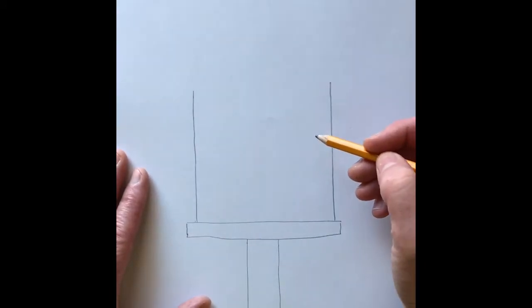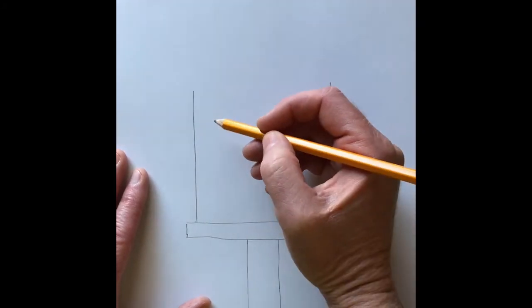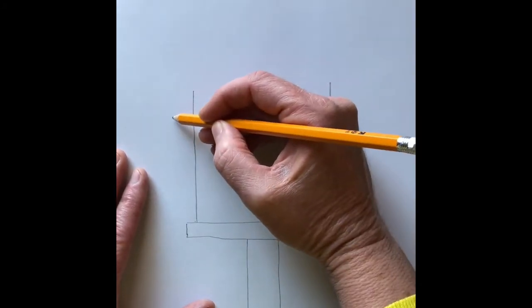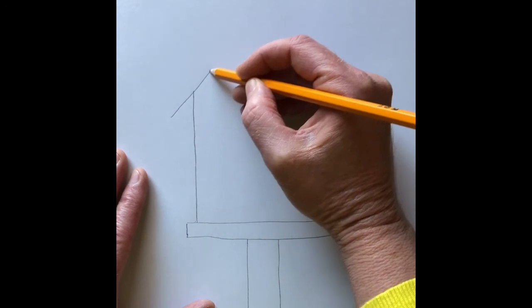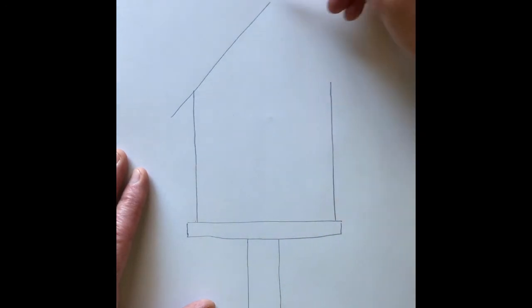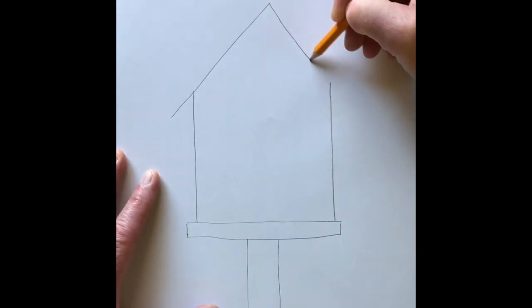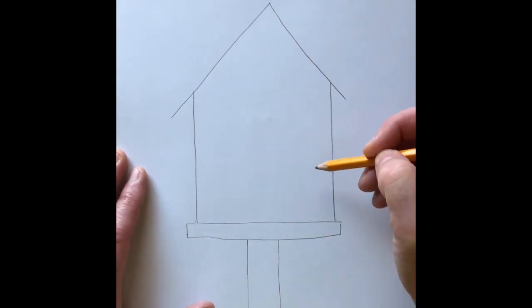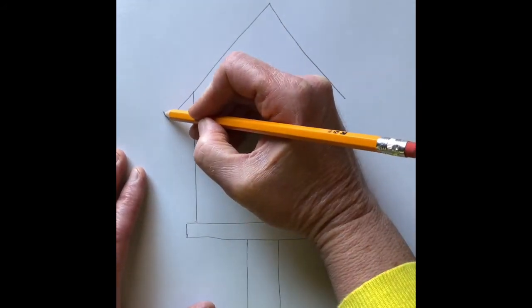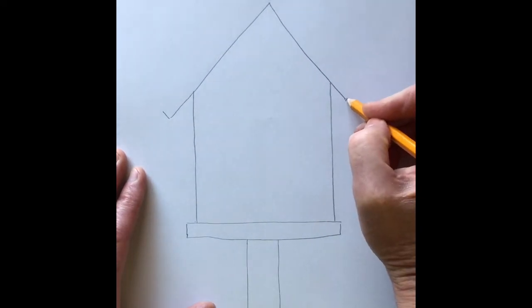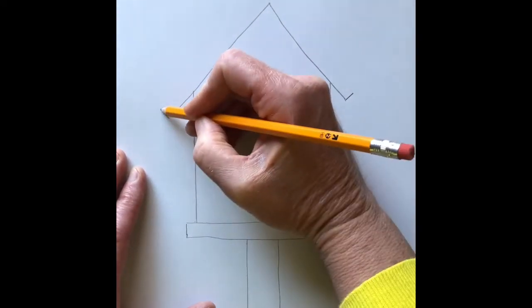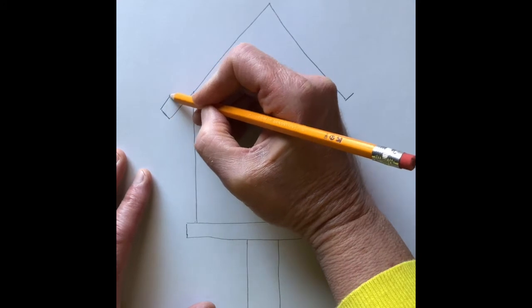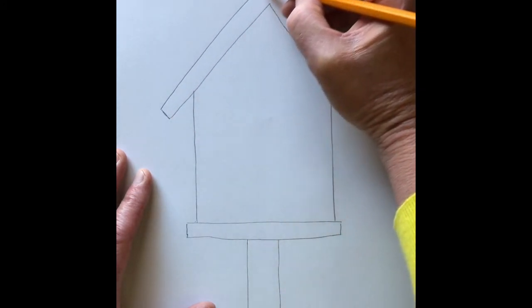And next is the roof. So I'm gonna do the roof with like an upside down letter V and connect that to the sidewalls. Now to give this roof a little bit of dimension I'm just gonna add a couple of little lines there and another big letter V to connect that all together.